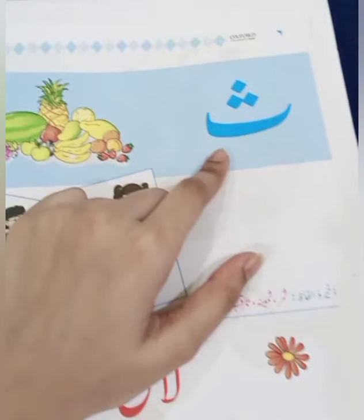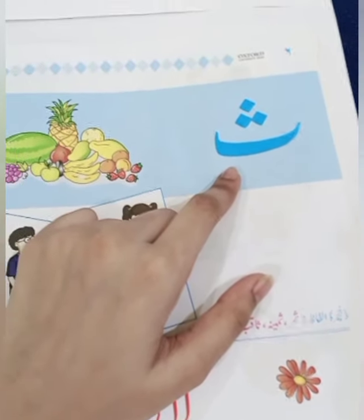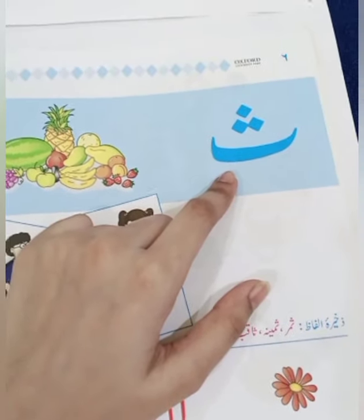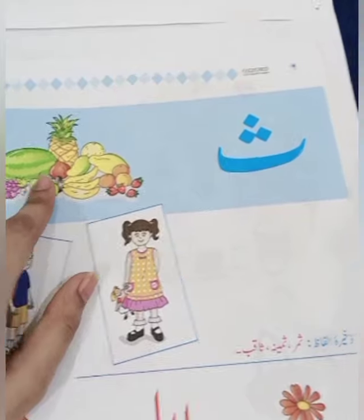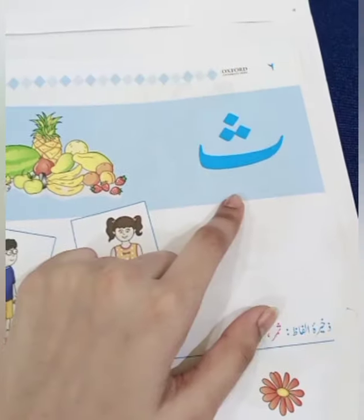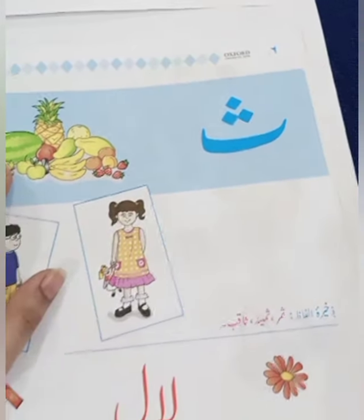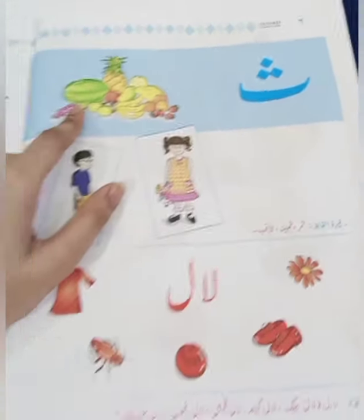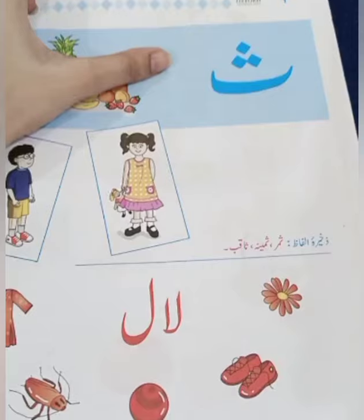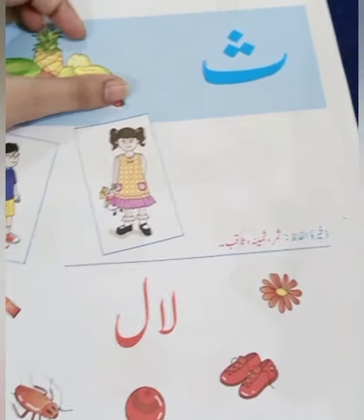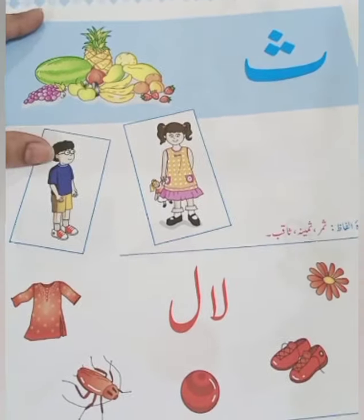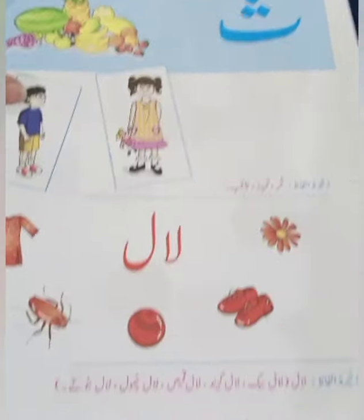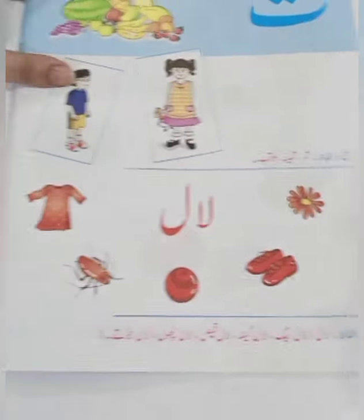اب نکالیے صفحہ نمبر چھے: سے کے اوپر تین نقطے۔ سے سے سمر، سے سے سمینا، سے سے ساکے۔ (Page 6 - Letter Se with three dots above: examples - Samar, Sameena.)